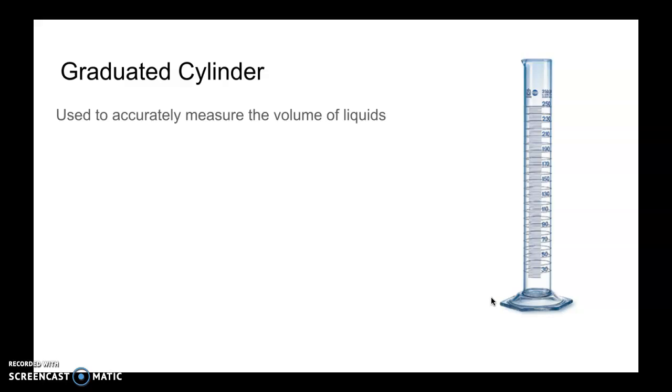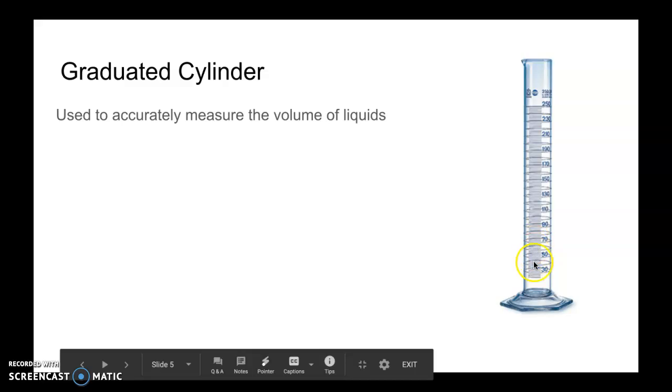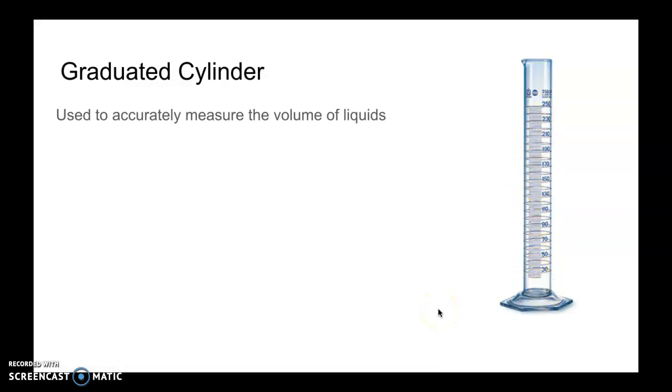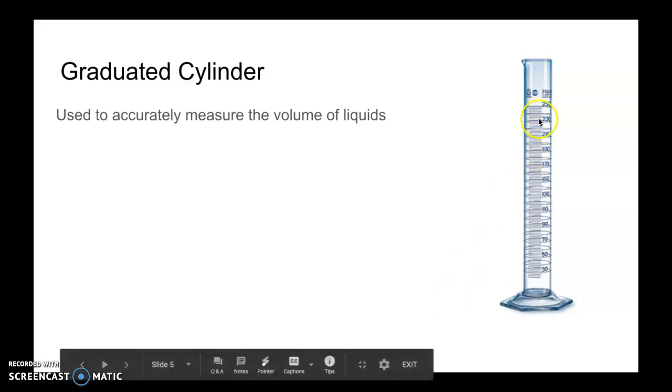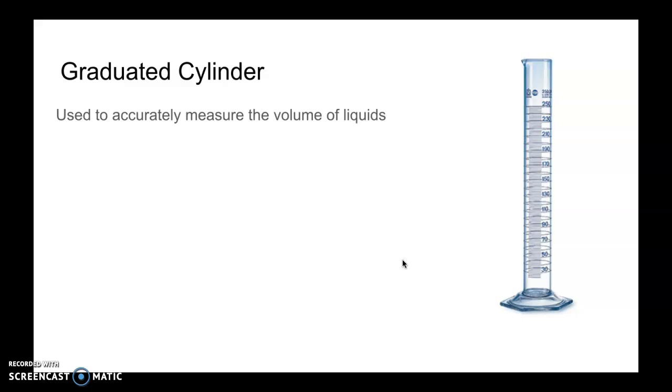This is a graduated cylinder. At Tice we have different sizes. Some are big, some are small. Some are made of plastic and some are made of glass. It gets its name because it's shaped like a cylinder and all these little dashes are called graduations. Basically those little graduations are just taking these big numbers that we can see and making them smaller so you don't have to estimate as much. This is a pretty accurate measuring tool.